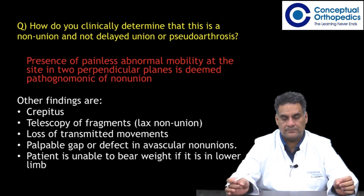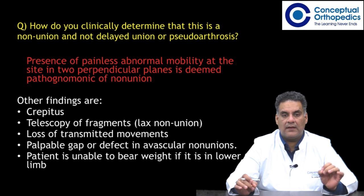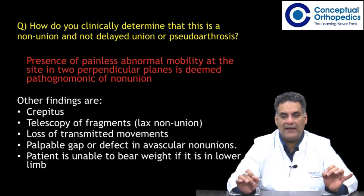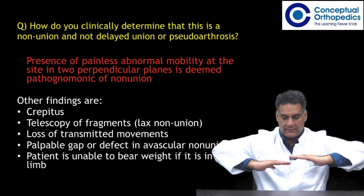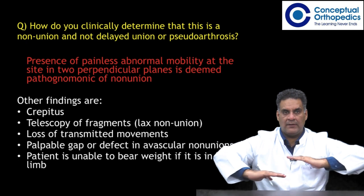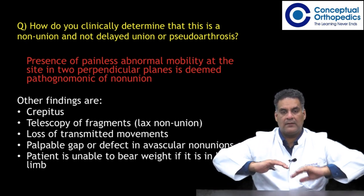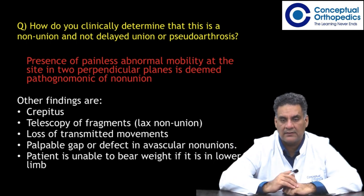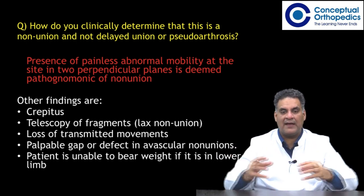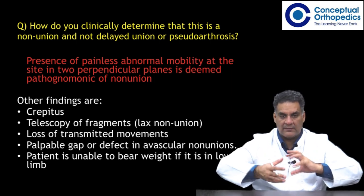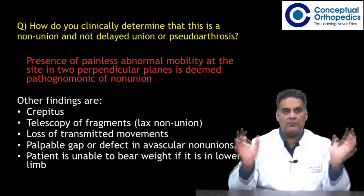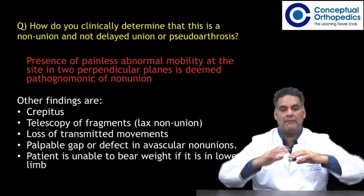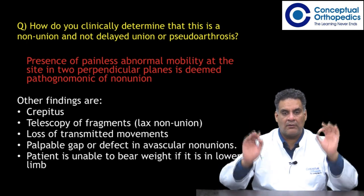How do you clinically determine this is a nonunion and not delayed union or pseudoarthrosis? Presence of painless abnormal mobility at the site in two perpendicular planes is pathognomonic of nonunion. There can be crepitus while rubbing, telescopy of fragments in a lax nonunion, loss of transmitted movements, a palpable gap in atrophic nonunion, and the patient will not be able to bear weight. But painless abnormal mobility in two perpendicular planes is deemed pathognomonic.